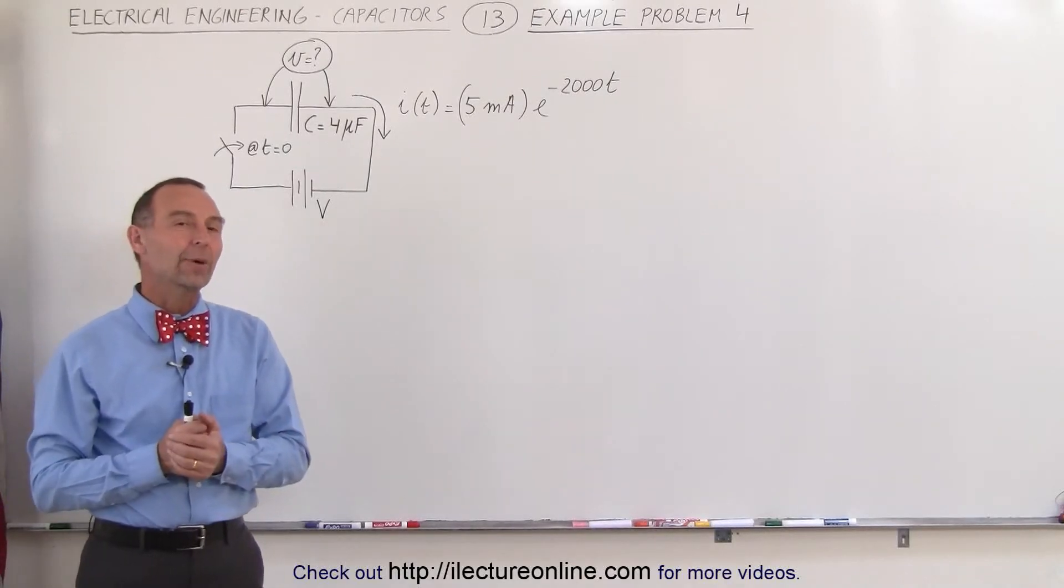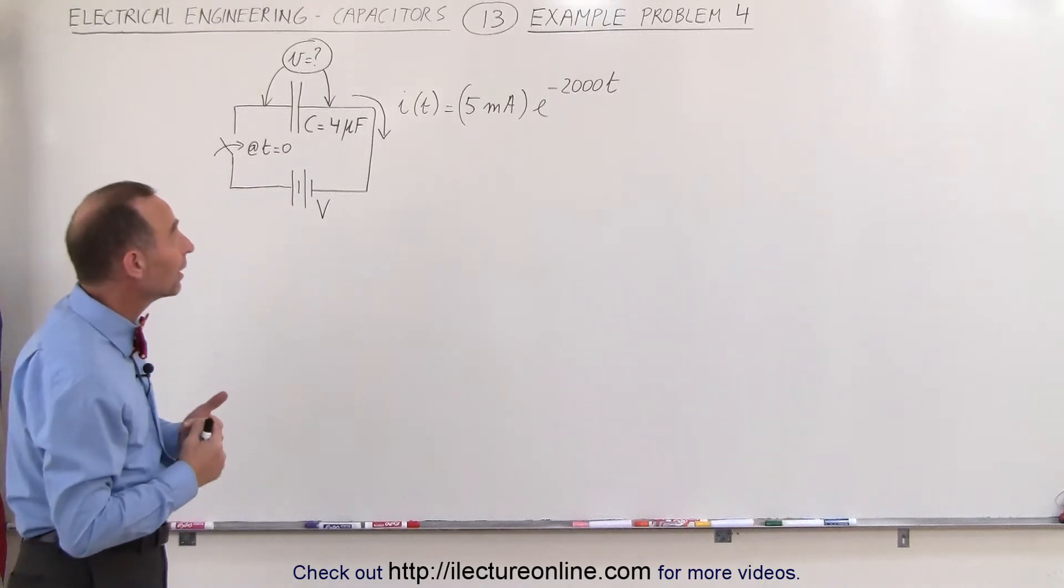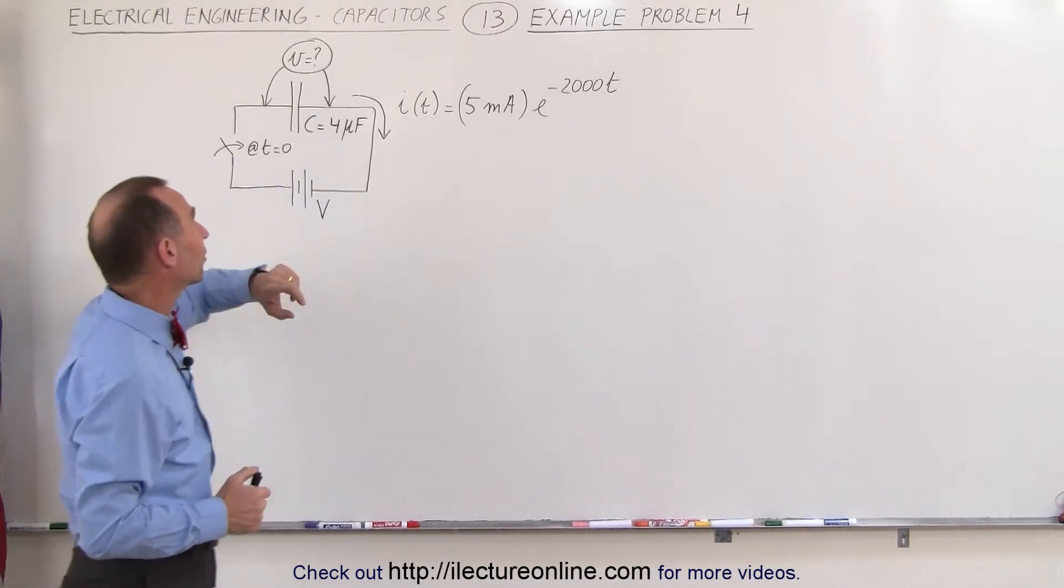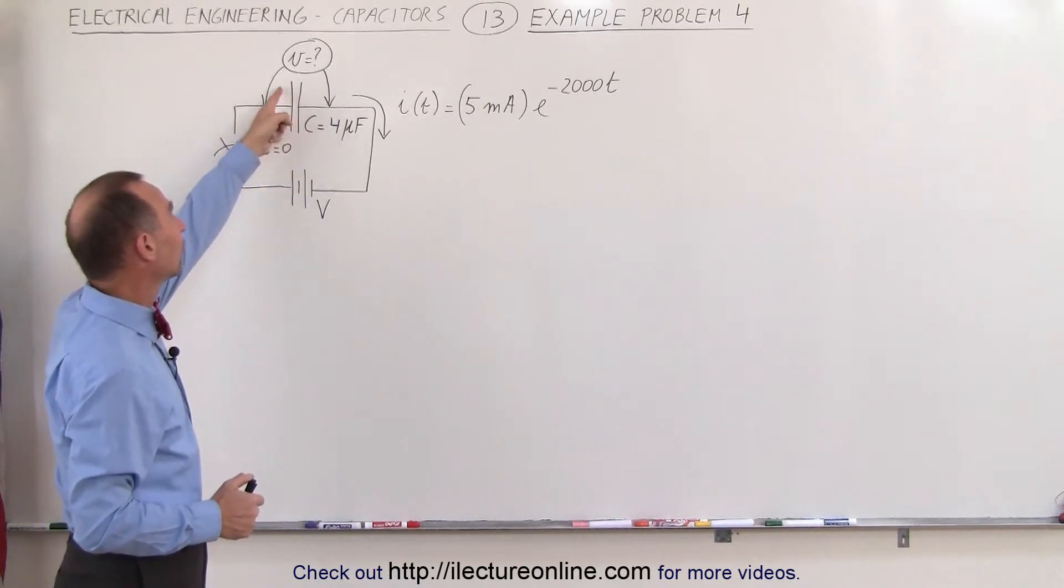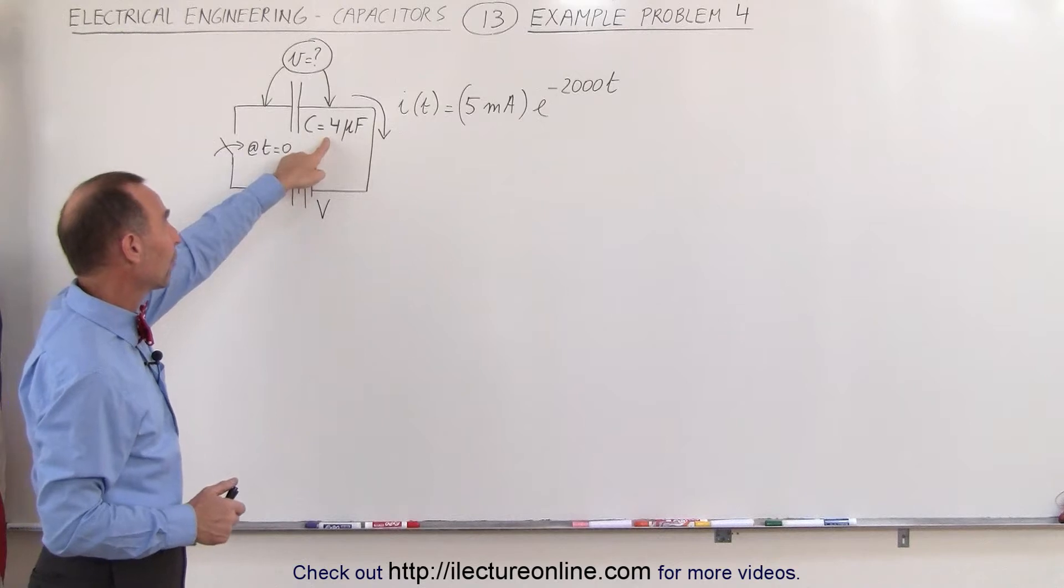Welcome to our lecture online. Now we have an example that looks kind of like the previous example but with things a little bit in reverse. In this case we're given the current through a capacitor and we're trying to find the instantaneous voltage across the capacitor. Notice the capacitance is 4 microfarad.